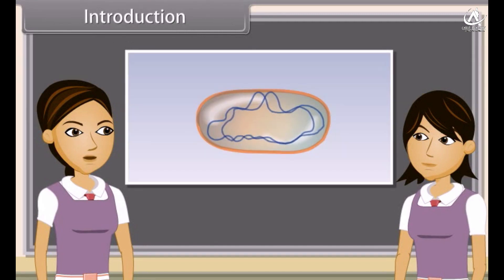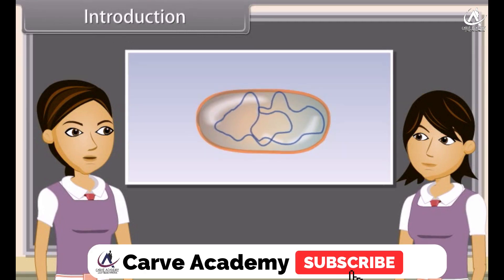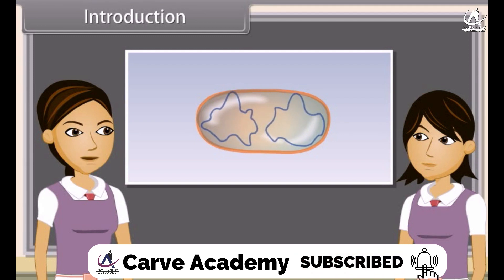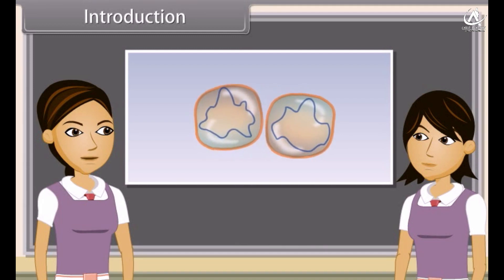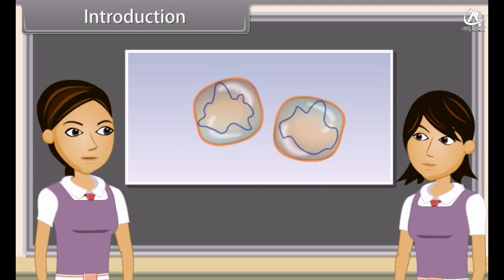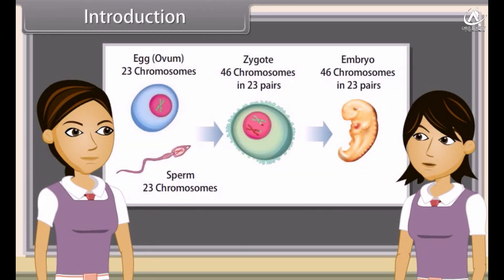As we have already discussed, reproduction is the ability of all organisms to produce young ones similar to themselves in most characters. The process which involves fusion of male and female gametes to form a new individual is known as sexual reproduction.